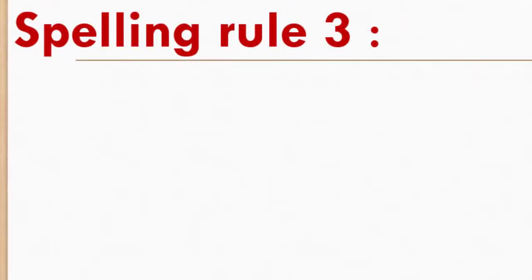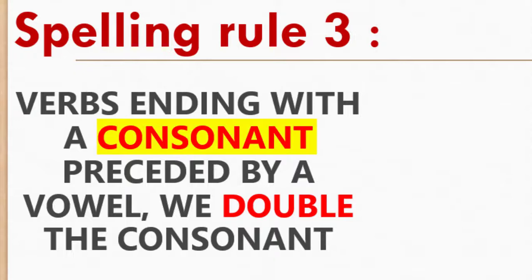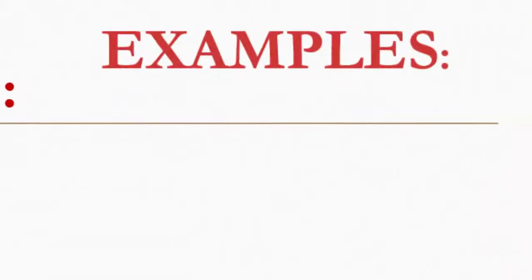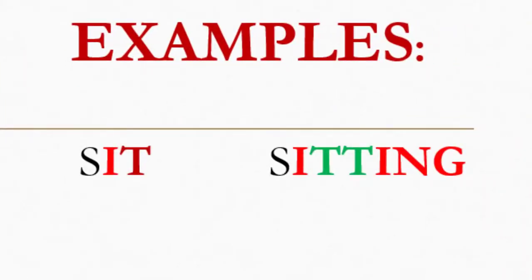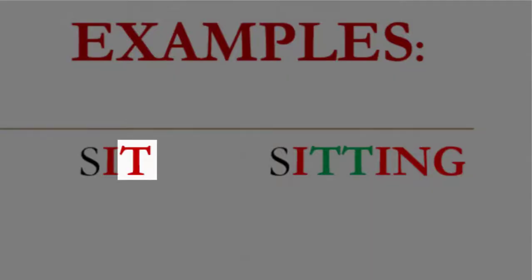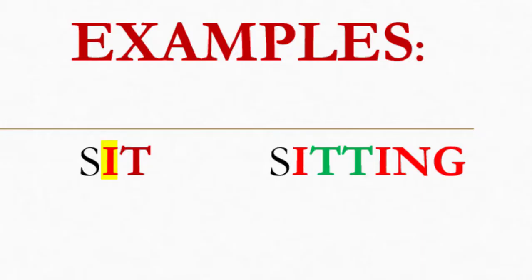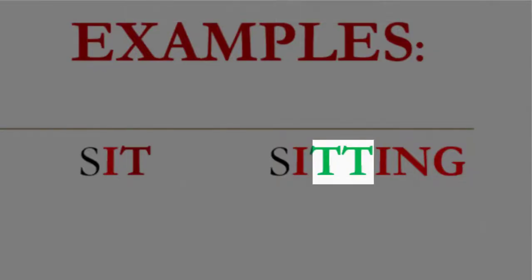Spelling rule number three: verbs ending with a consonant preceded by a vowel, we double the consonant. For example, sit. The last letter is t. Before it, we have i, which is a vowel plus consonant. In this situation, we double the consonant, then we add the ing.